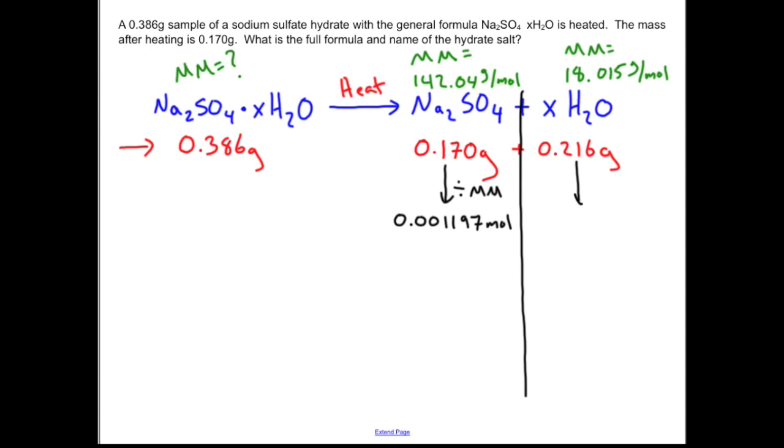And how many waters does that deal with? So divide this by the molar mass of H2O and you get 0.01199 mole. Now it's just coincidence on this problem, it doesn't always happen this way, but notice there's an extra zero here compared to here but more or less these are the same numbers.